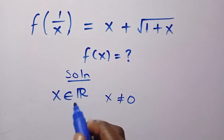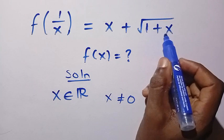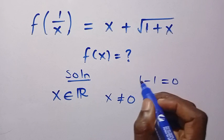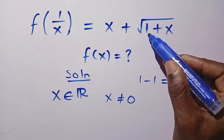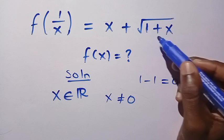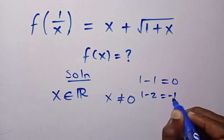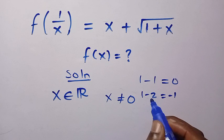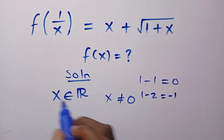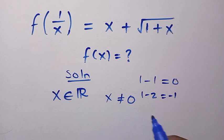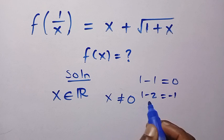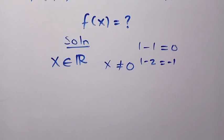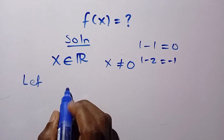Looking at the negative part: if x = -1, then 1 + (-1) = 0, and √0 = 0, so x = -1 is satisfied. But if x = -2, we get 1 + (-2) = -1, and √(-1) is not a real number — it's complex. So we neglect x = -2 and below. Therefore x is a member of the real numbers, not equal to 0, and excluding values from -2 downward; but x = -1 is included.